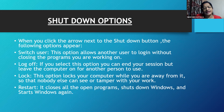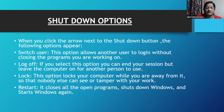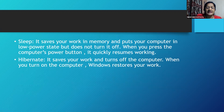When you click the arrow next to the Shutdown button, the following options appear. Switch User: allows another user to log in without closing the programs you are working on. Log Off: you can end your session but leave the computer on for another person to use. Lock: locks your computer while you are away so that nobody else can see or tamper with your work. Restart: closes all open programs, shuts down Windows, and starts Windows again. Sleep: saves your work in memory and puts your computer in a low power state but does not turn it off — press the power button to resume. Hibernate: saves your work and turns off the computer; when you turn it on, Windows restores your work.